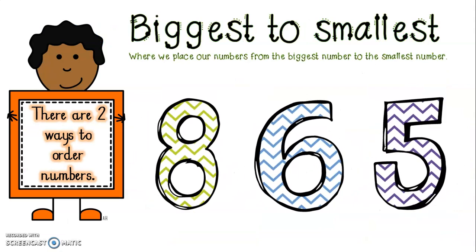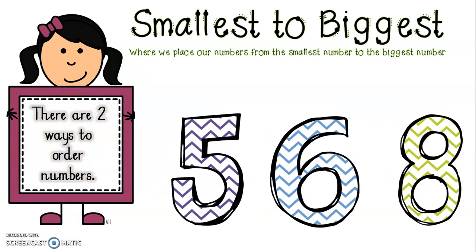There are two ways to order numbers. The first is from the biggest to the smallest, where we place our numbers from the biggest number to the smallest number. Here we have the numbers 8, 6, and then 5 — 8 being the biggest number. The next way is smallest to biggest, where we place our numbers from the smallest to the biggest. Here we have 5, 6, and 8 — 5 being the smallest number.